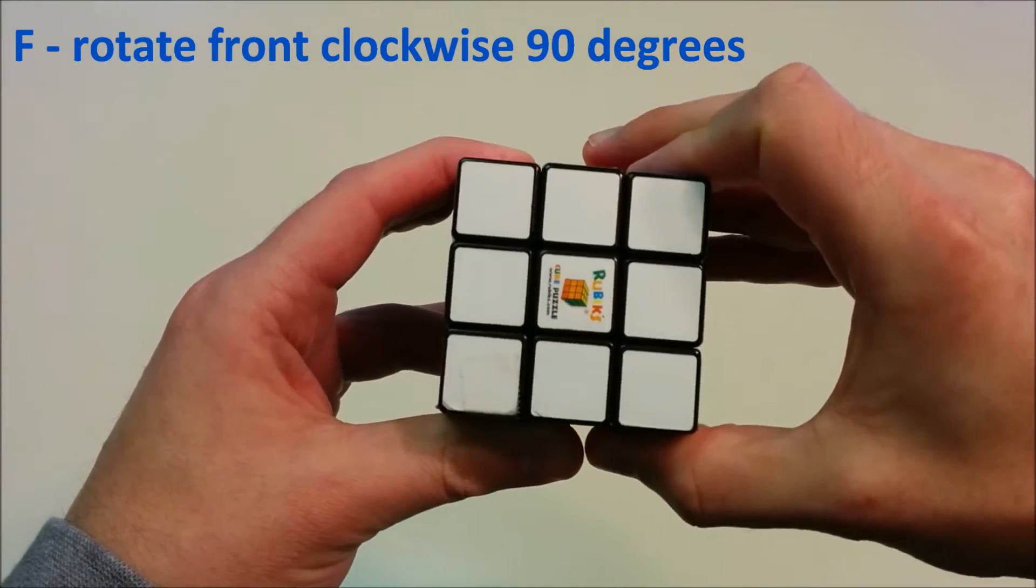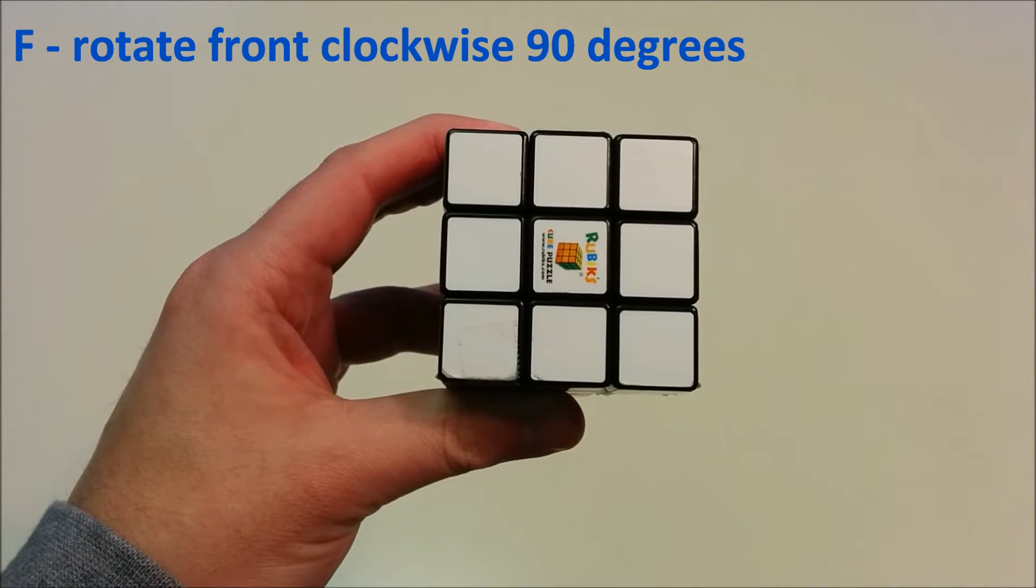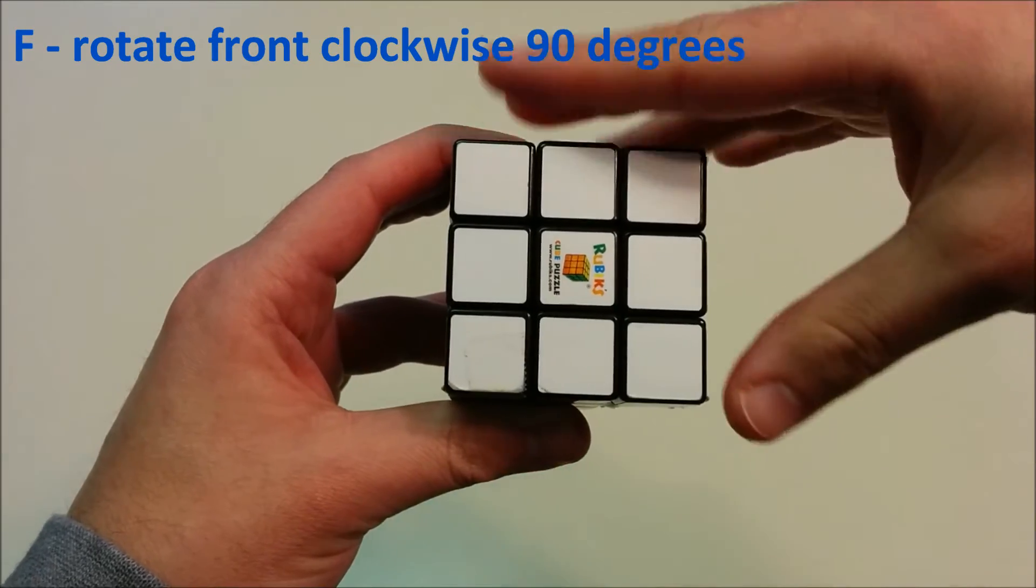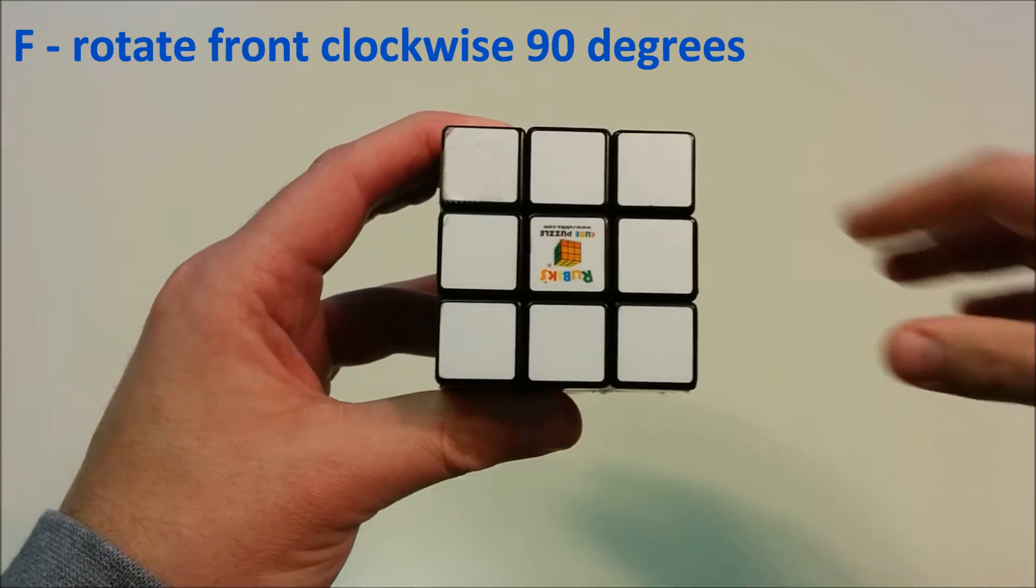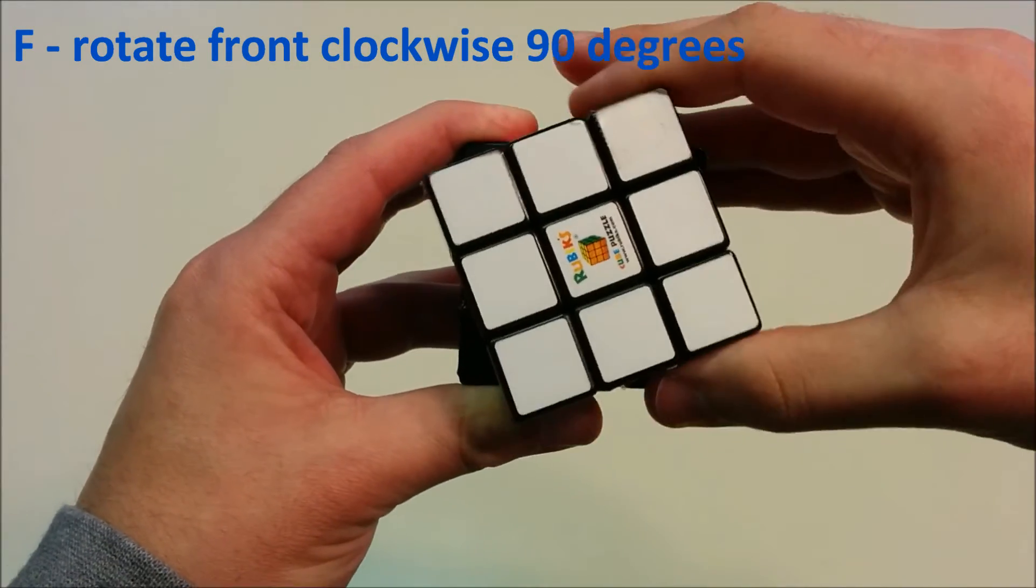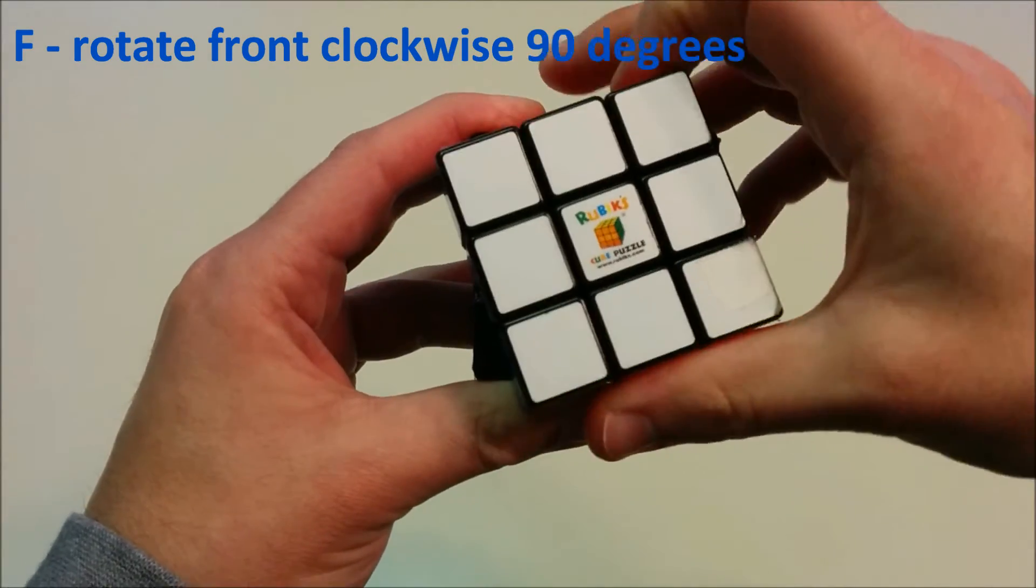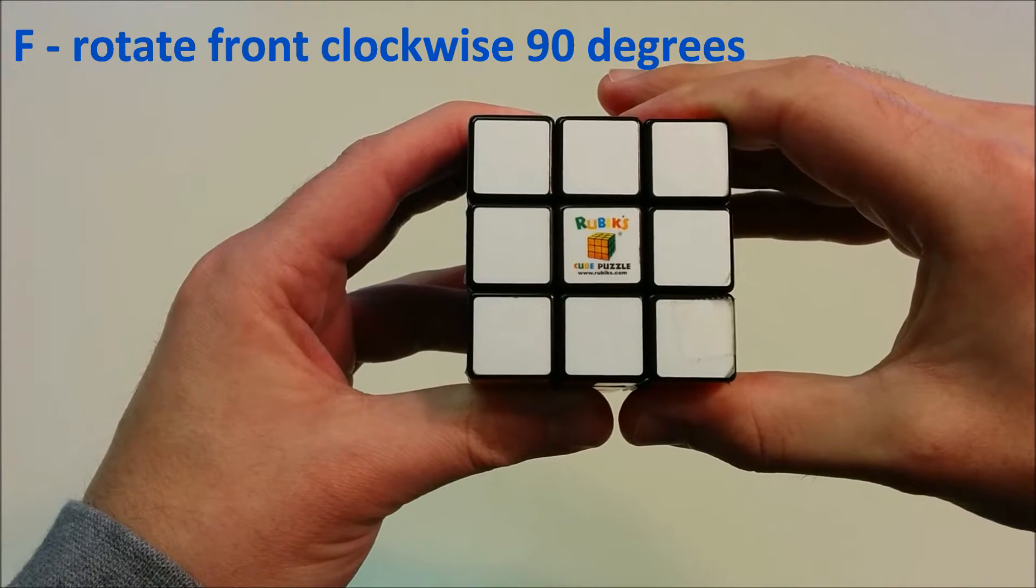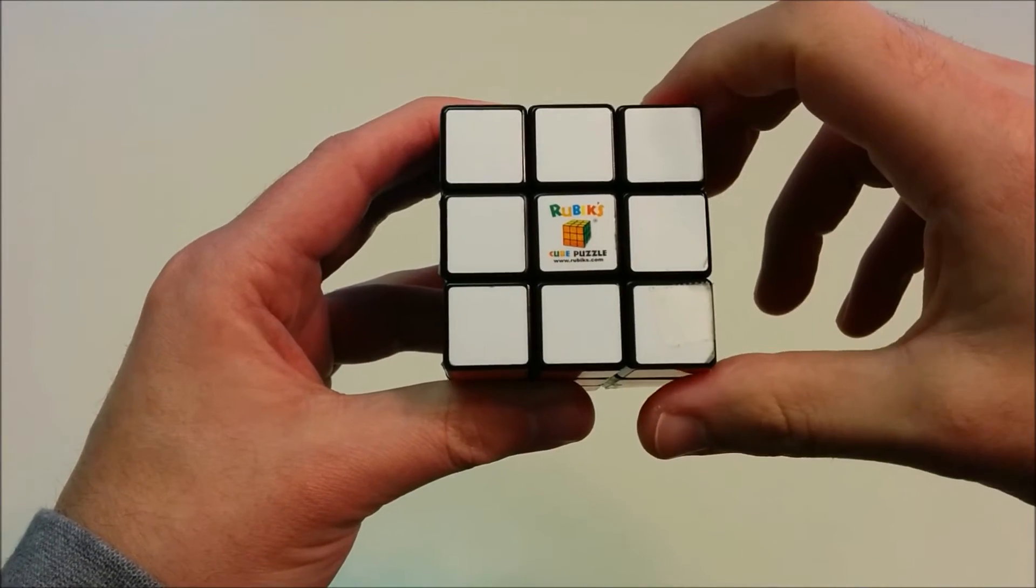If we rotate the face we're looking at 90 degrees clockwise, that move is called F. If we do F a second time, that rotates it 90 degrees clockwise once more. This is F a third time, and here's F a fourth time, which brings the front face back to its original position.